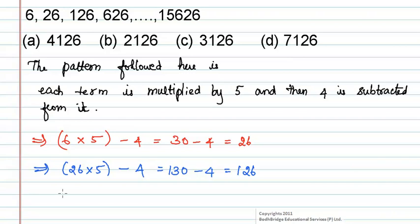Now, 126 is multiplied with 5 and then 4 is subtracted from it. We will get 630 minus 4 which is equal to 626.